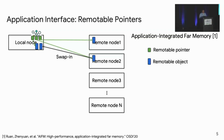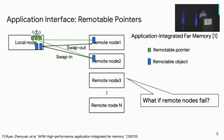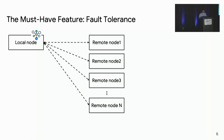The system runtime swaps in or fetches any object the application wants to access, and in the background also swaps out or evicts cold objects to far memory. The general idea of far memory sounds cool, but one practical problem is: what if any remote node fails? If remote node 2 fails, then the application data on that node will be lost, causing severe trouble or even crashes to the running applications on the local node.